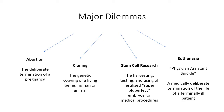Abortion, by general definition, is the deliberate termination of a pregnancy. Cloning is the genetic copying of a living being, human or animal. Stem cell research is the harvesting, testing, and using of fertilized — what are called pluripotent — embryos for medical procedures. And euthanasia, also known as physician-assisted suicide, is the medically deliberate termination of the life of a terminally ill patient. All of these dilemmas involve something regarding the medical service industry or biomedical technology and whether or not such procedures are moral.